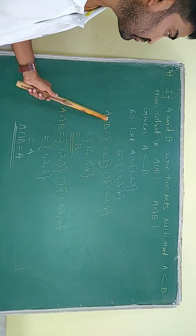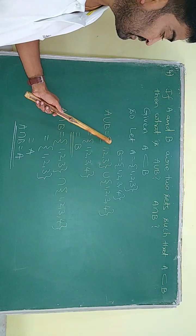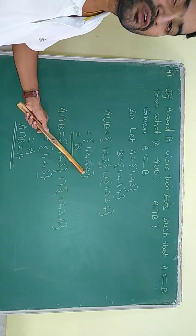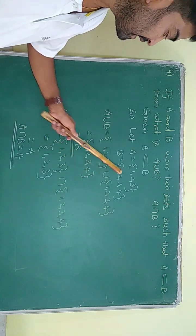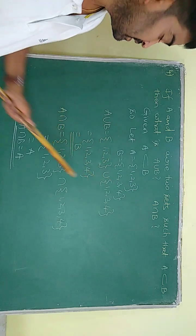Now I have to find A union B. A union B means all the elements of A and B together we have to write in a new set, that is {1, 2, 3, 4}. This is nothing but our B. And we will calculate A intersection B also.